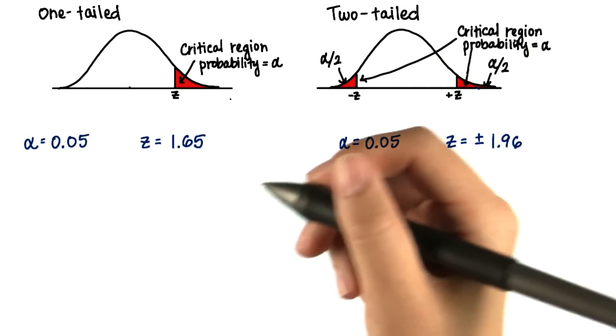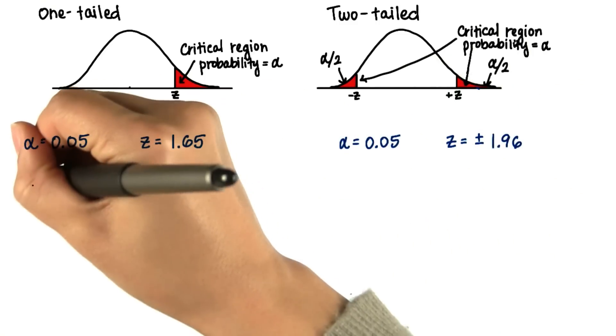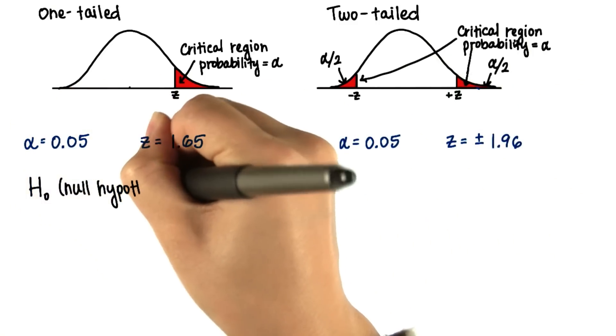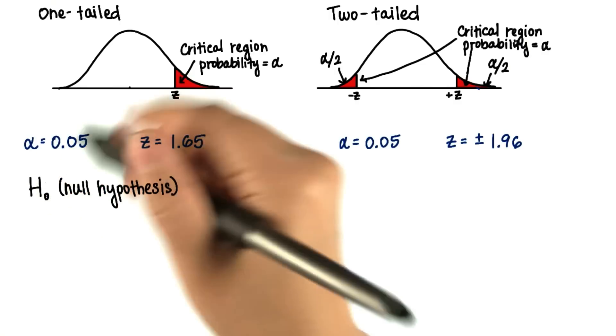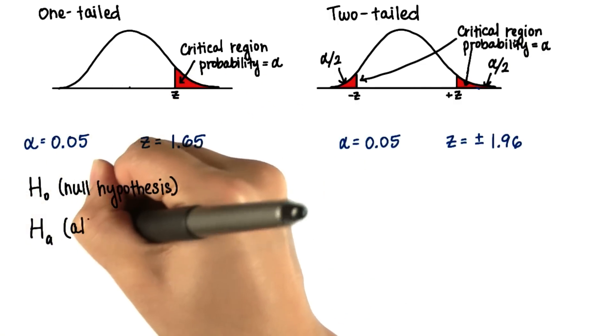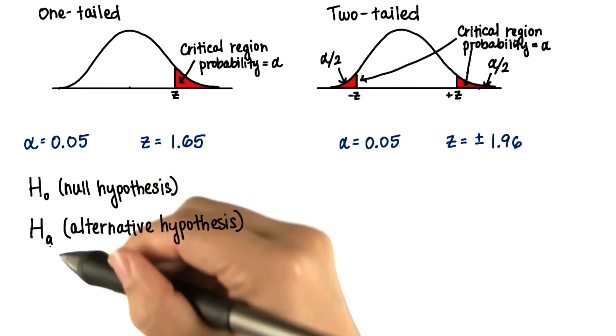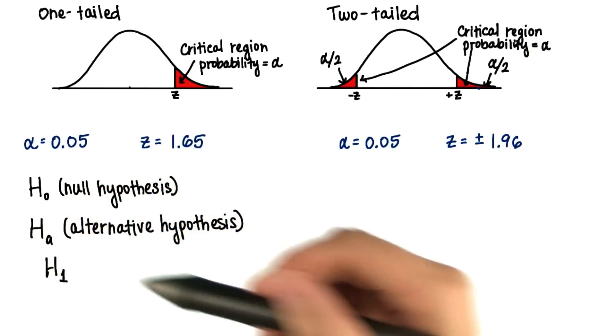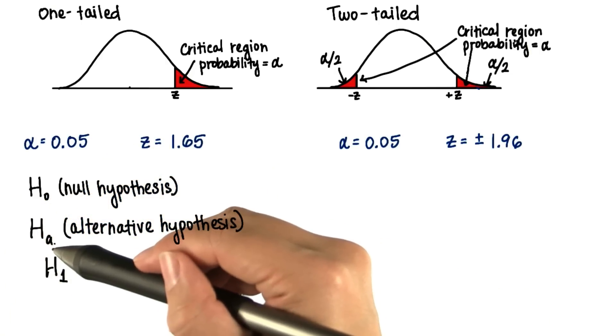We notate these two outcomes as the null hypothesis, which we call H naught or H sub 0, and the alternative hypothesis, H sub a. Other ways of notating this could be H sub 1, but I'll just stick with H sub a for alternative.